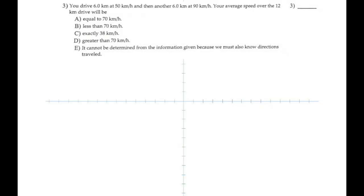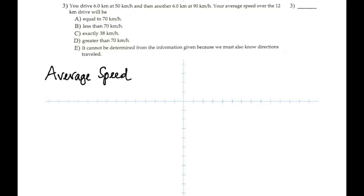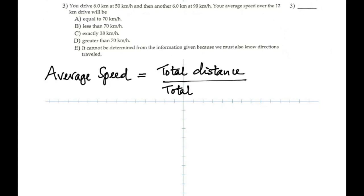Here is question three. You drive 6 km at 50 km/h, then another 6 km at 90 km/h. Your average speed over the 12 km drive will be — usually you might think to add the two speeds and divide by 2, but you cannot do that here. The reason is the first 6 km is driven at a slow speed, so the person takes a longer time there and a shorter time for the second part. You cannot give equal credit to those velocities. You have to remember the formula for average speed: total distance divided by total time. Find the time in each case and add them up.